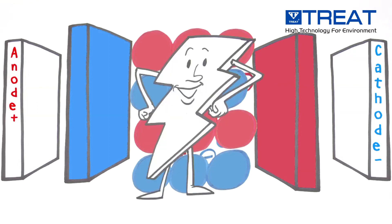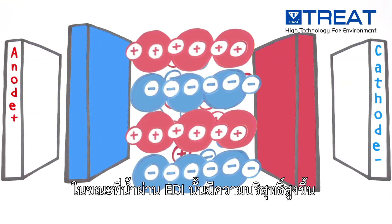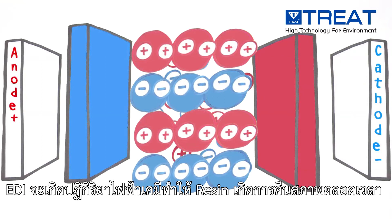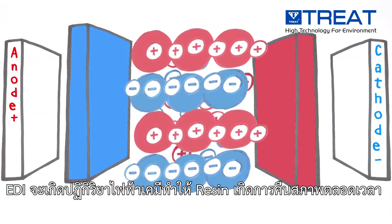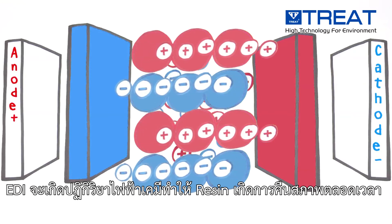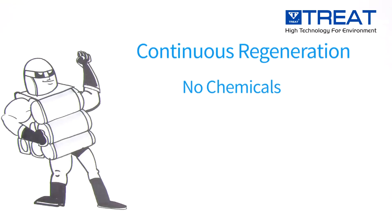To produce high purity product water, as the water passing through the module becomes pure, an electrochemical process takes place that continuously reactivates the resins, creating the chemical regenerants in place — so it is not necessary to handle hazardous chemicals.